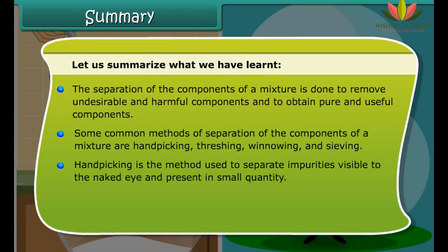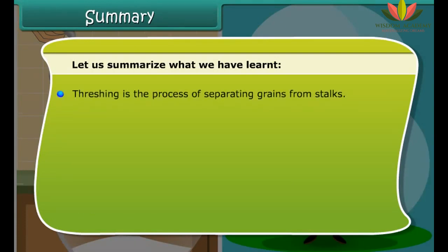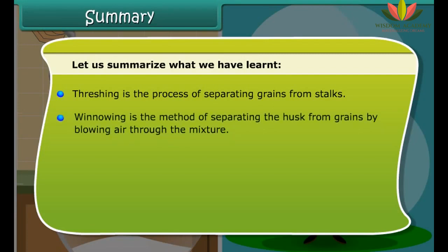Some common methods of separation of the components of a mixture are hand picking, threshing, winnowing and sieving. Hand picking is the method used to separate impurities visible to the naked eye and present in small quantity. Churning refers to the method of separating components such as butter from milk or curd.